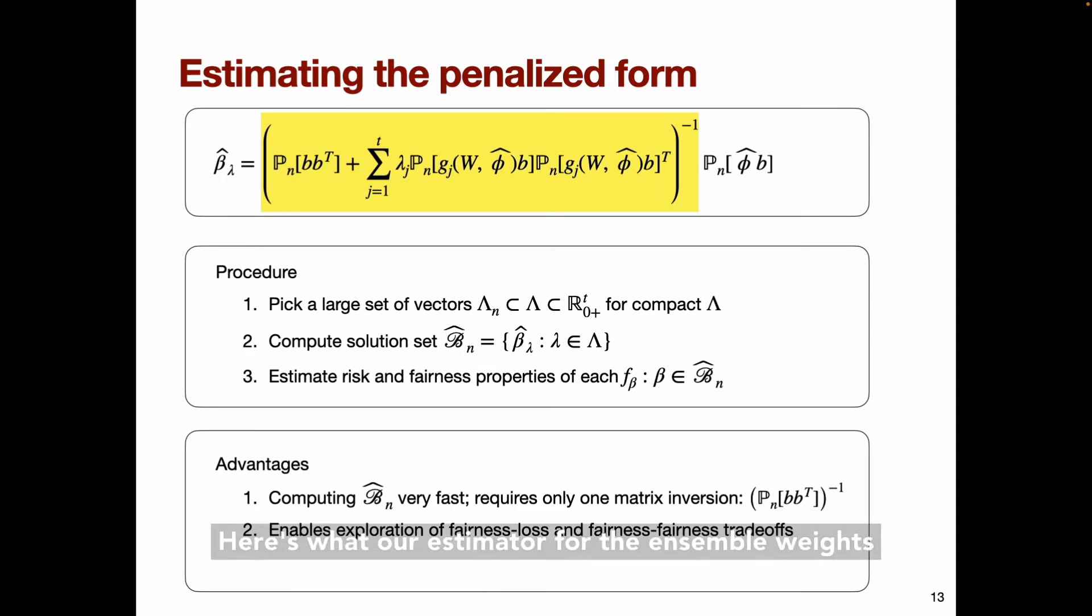Here's what our estimator for the ensemble weights looks like. Here, the notation pn just refers to the empirical measure or sample mean, and phi hat is a particular nuisance parameter estimate. The important takeaway here is that we can construct a large set of ensemble predictors very efficiently. First, you pick a large set of penalty vectors, lambda n, then you compute the set of all predictors indexed by those lambdas, and estimate the risk and fairness properties of each of those predictors.